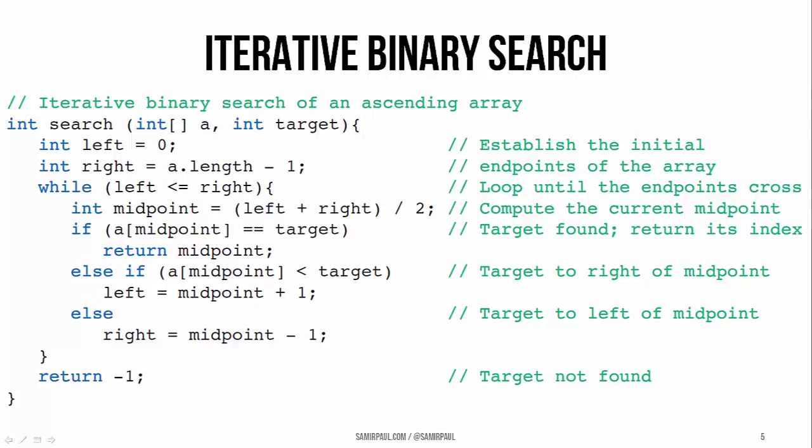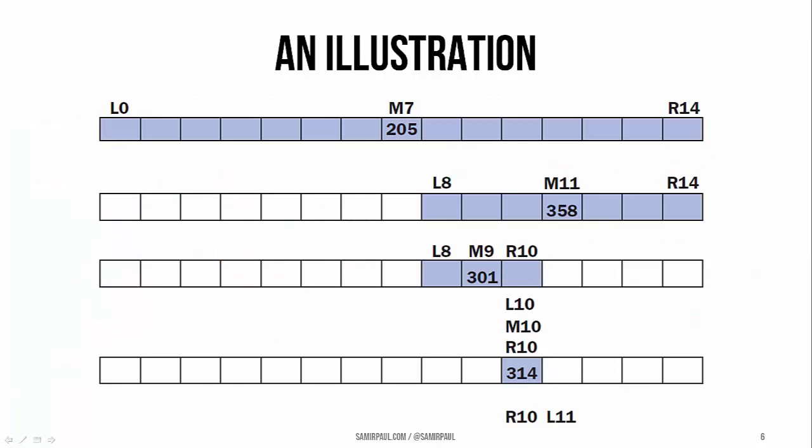Here you can see the iterative version. I encourage you to pause the video and read through this more carefully. The main idea is that we have two variables, left and right, which keep track of the current ends of the sub-list we're looking at. Those variables are brought closer and closer together. Ultimately, when those two variables cross or reach the same element, we've reached the end of the algorithm — and at that point, if we found the element, perfect; if not, we know it's not present.